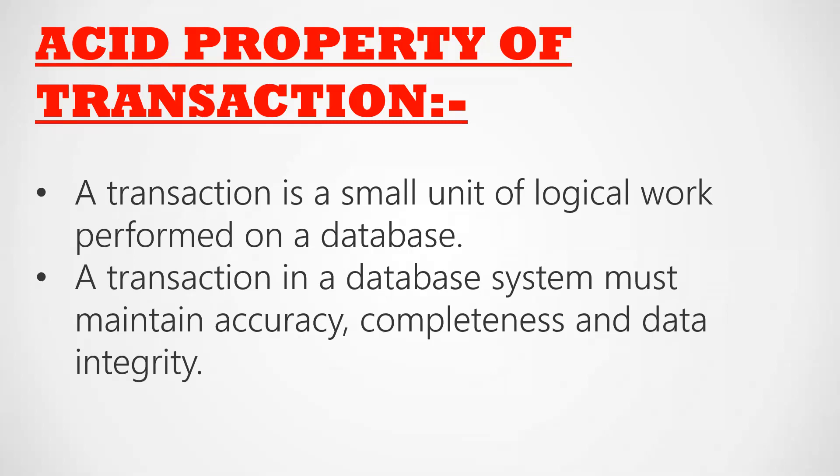Every transaction performed in a database system has certain properties that must be maintained. The transaction must be accurate — it must maintain accuracy during its operations. The transaction must be complete, and all data integrity must be maintained. So whenever we perform a transaction in a database, accuracy, completeness, and data integrity — meaning the validity of data — must be maintained.